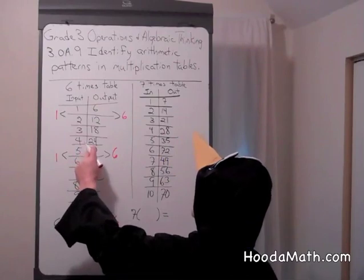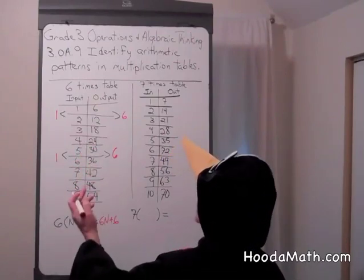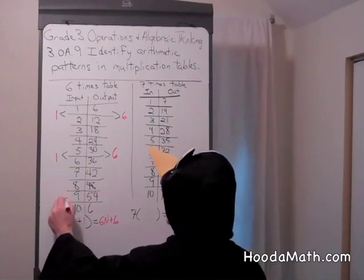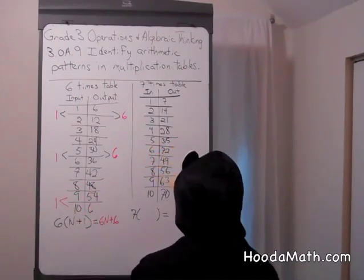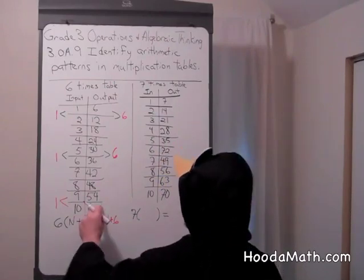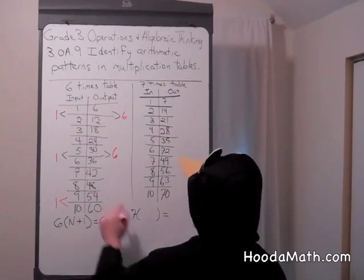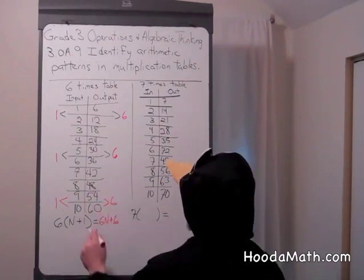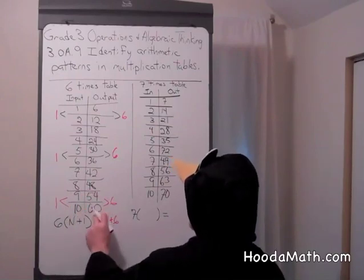So, to go from 30 to 36, we add six. And that happens all the way along. If we go from nine to 10, we add one. Oops. And we go from 54 to 60, we add six. Six times nine is 54, plus six is 60.